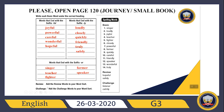Let's check the word sort. Listener — listener ends with -er, so it is appropriate for the last category, which is words that end with the suffix -er. Calmly — it ends with -ly, so I need to write it in the second category, which is words that end with the suffix -ly.